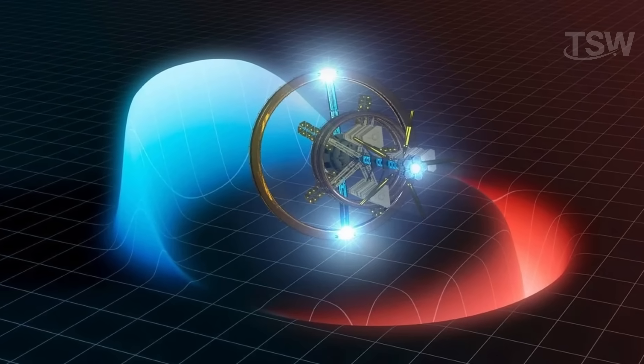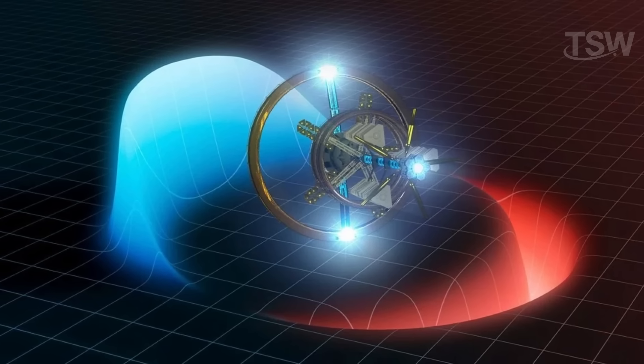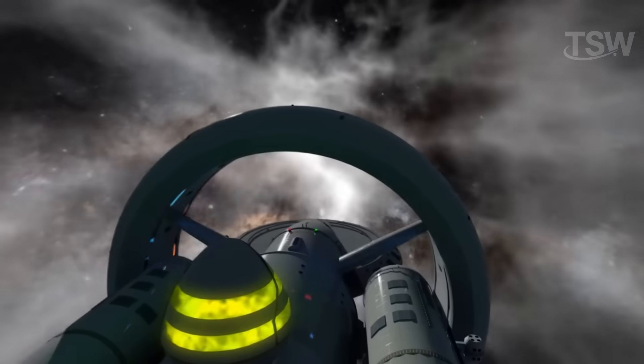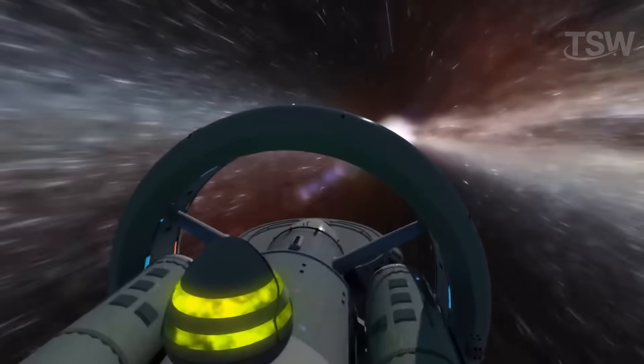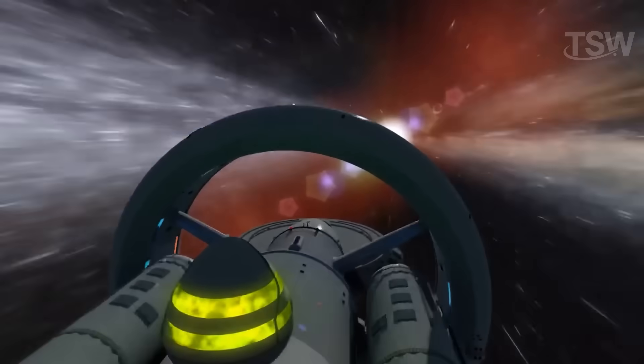That model, created by physicist Eric Lentz, used a new mathematical approach called solitons, stable waves that can move without changing shape. In this idea, the soliton would carry the spacecraft through space, like a calm wave carrying a surfer. Again, this is all purely theoretical, but it opens up new doors for future exploration.